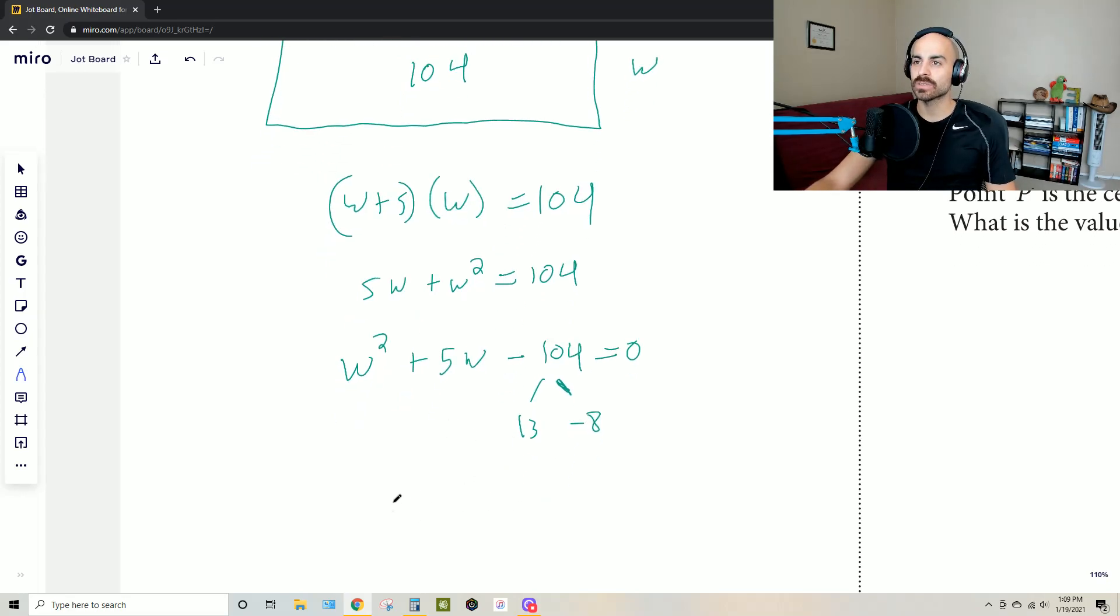That means that we can now factor this as w plus 13 w minus eight. And these are equal to zero.